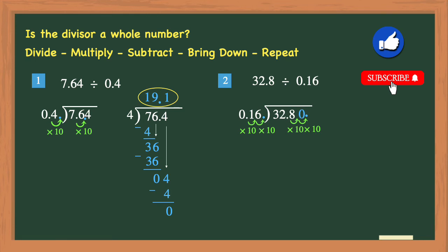Let's go ahead and rewrite this long division problem again. The dividend is now the whole number 3280. We'll go ahead and place the decimal point after the ones place, just in case we need it later. The divisor is the whole number of 16. Don't forget to bring the decimal point up into the quotient. Now we're ready to start dividing.